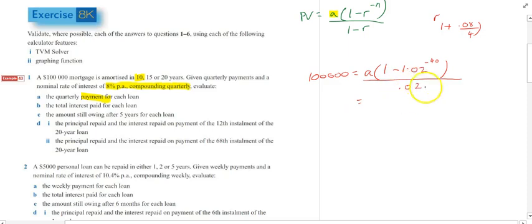All right, I'm going to rearrange that. Move the 0.02 up to here. So 100,000 times 0.02. Move all of that, because this is A times all of this. I can just divide it by all of that. 1 minus 1.02 bracket to the power of negative 40 equals my A value.